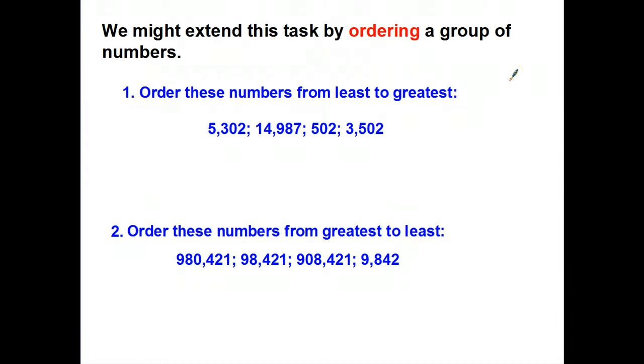We might extend this task by ordering a group of numbers, which is really just comparing four of them, or more, or whatever. The first thing I need to notice, though, is how do they want me to order them? In this case, it says order them from least to greatest. So it means my smallest has to go first. And the next thing I want to notice is, are any of them obviously smaller or larger than the other?